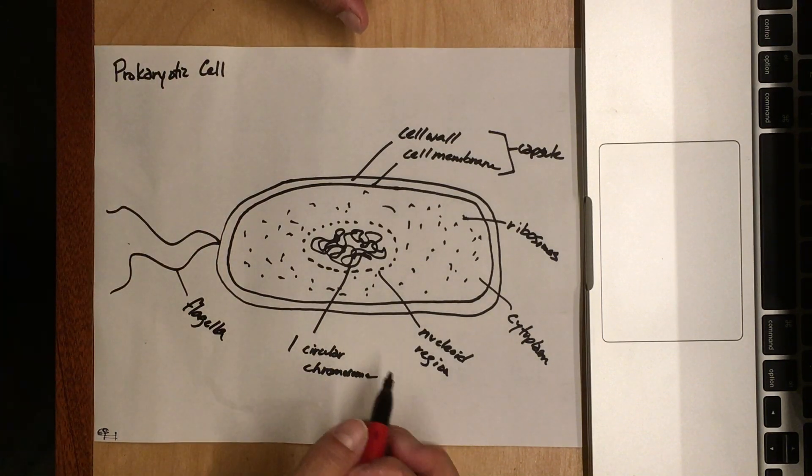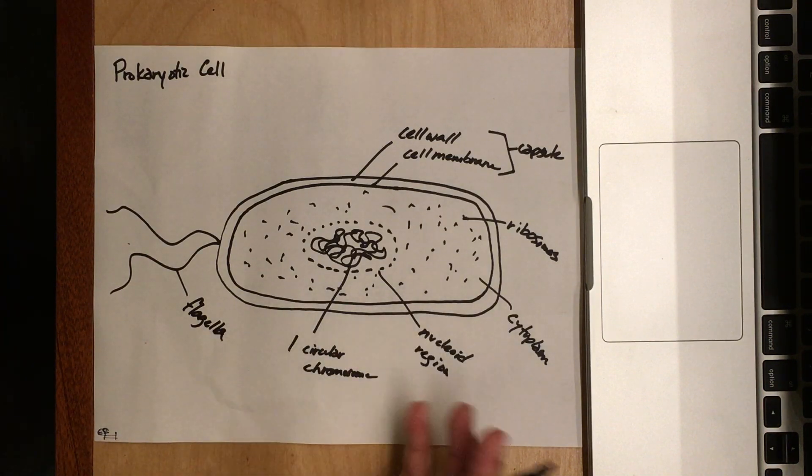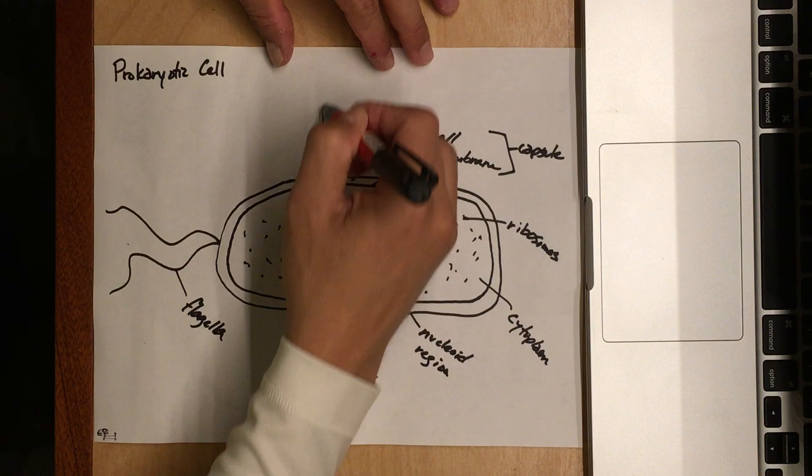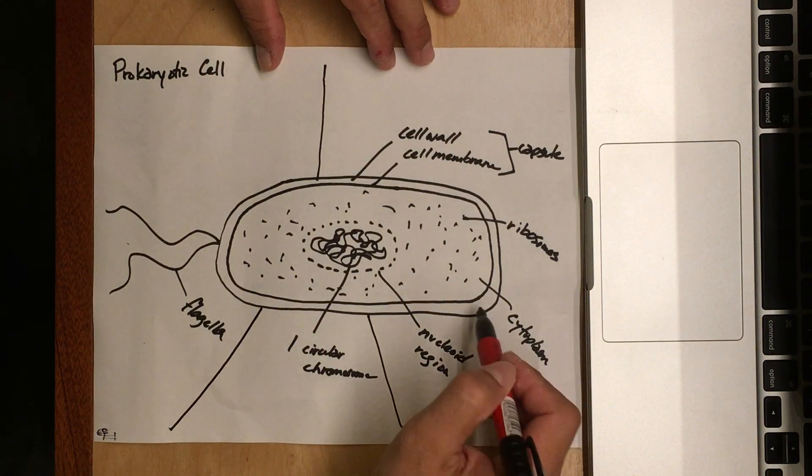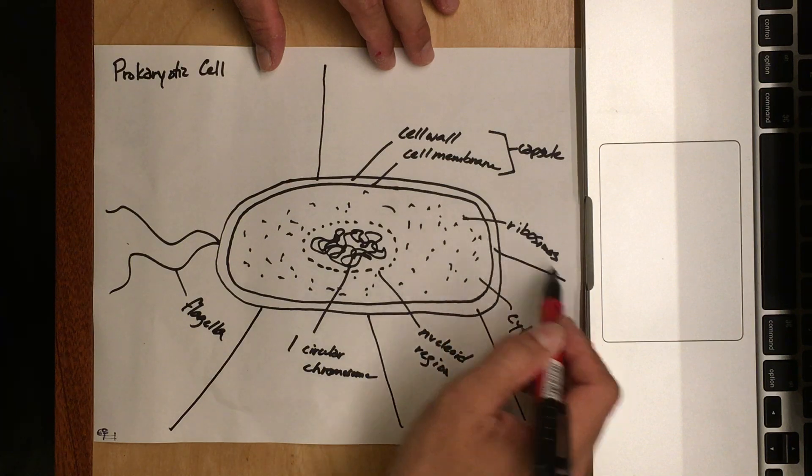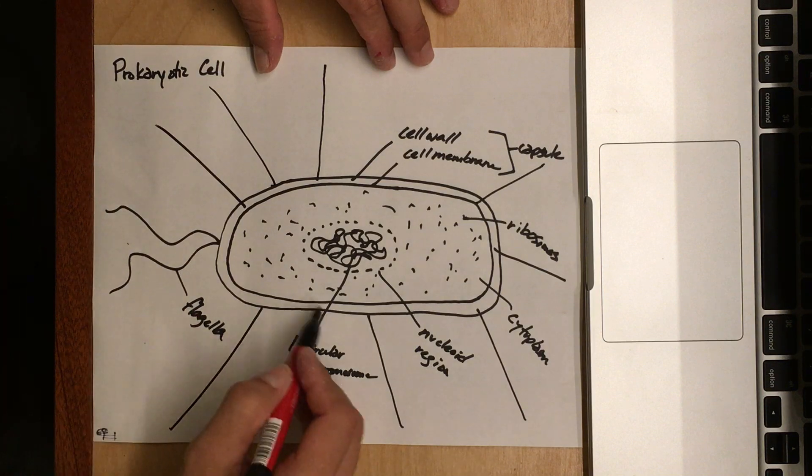Our prokaryotic cell has flagella on the outside. The final thing we're going to draw is something called the sex pili. They're all over the place—these huge columns that come out and go in every direction. It's going to make your drawing suddenly look really ugly, but they stick out in every direction, and bacteria have them everywhere.